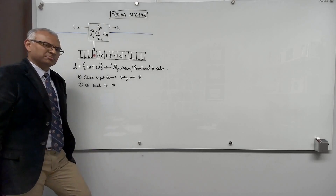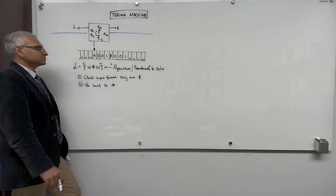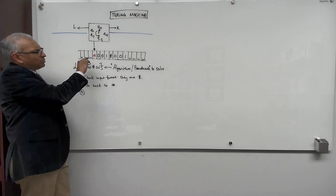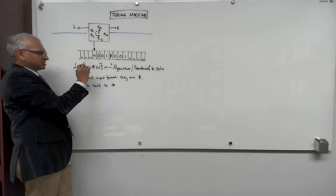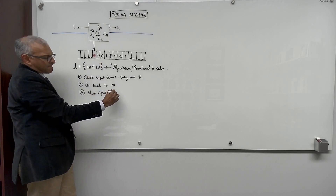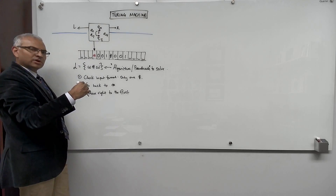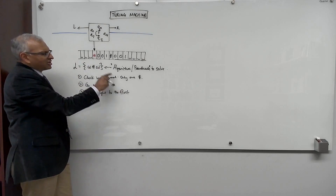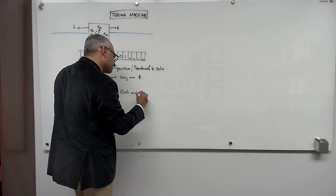You can think of this as: let's check the input. Someone tells you, 'I'm giving you a file with only numbers, find the maximum.' Well, it's a good idea to check that the file has only numbers. So we've checked the input, we've come back to the start, and we're ready to process the string. So the first bit — we're going to check the first bit with the first bit, second bit with the second bit, third bit with the third bit. So how do we find the first bit? We move right to the first unchecked bit.